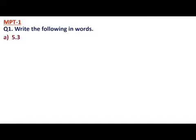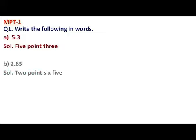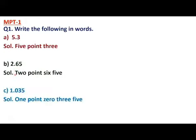Let us see some questions from practice time. Question number one: write the following in words. For 5.3, we read and write it as five point three. For 2.65, we read and write it as two point six five. For 1.035, we read and write it as one point zero three five.